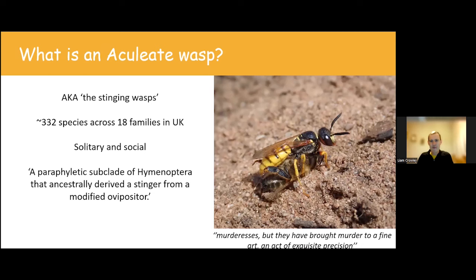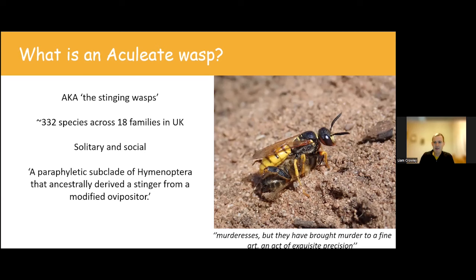If we're going to go through all the aculeate wasps, we should start by defining what we mean by 'aculeate wasp.' The common name for Aculeata could be the 'stinging wasps.' In the UK, we have about 332 species across 18 families — it's 'about' because the number is changing all the time. The more we study them, the more we find cryptic species or realise we've got the taxonomy wrong. On top of that, they're a very mobile group with many species arriving from the near continent, almost certainly driven by climate warming.